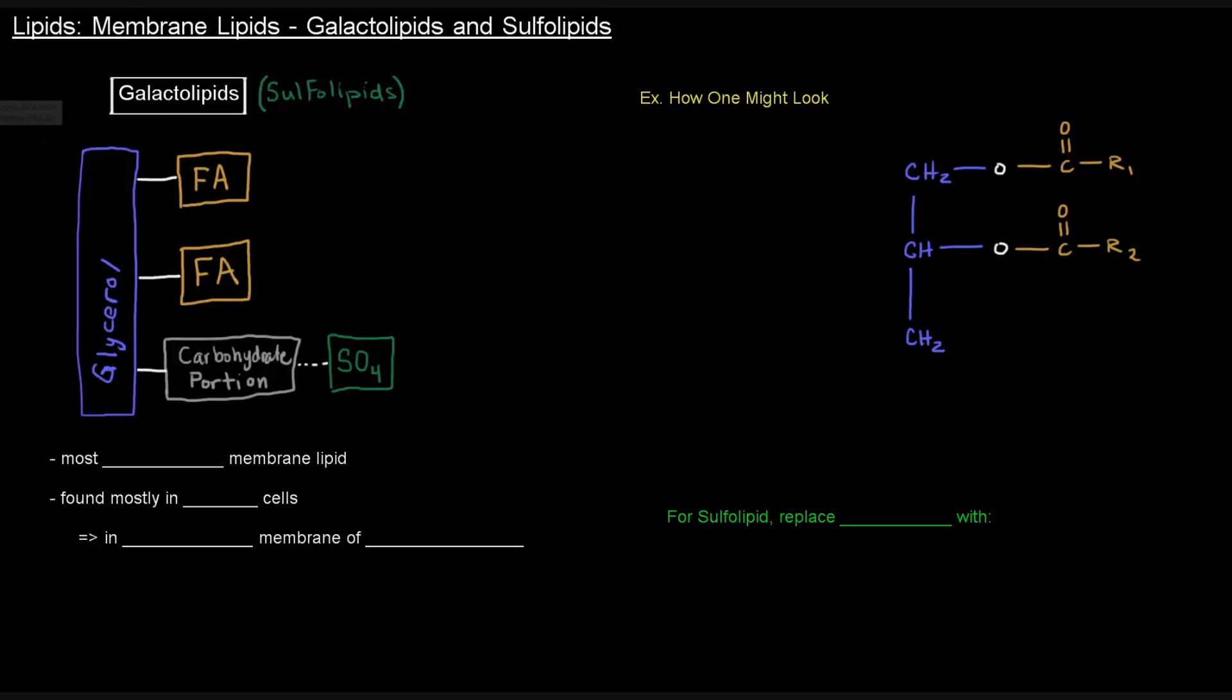There is thought that this is the most prevalent type of membrane lipid. It's the most abundant and it's found mostly in plant cells, specifically in the thylakoid membranes of chloroplasts.